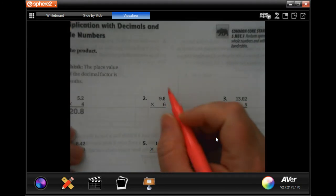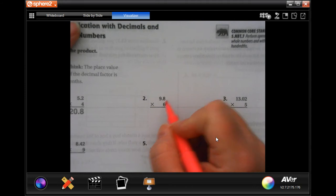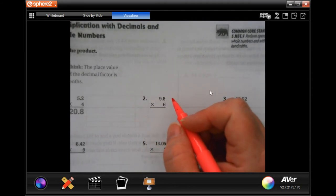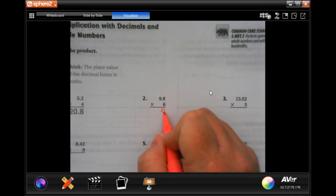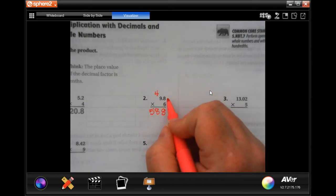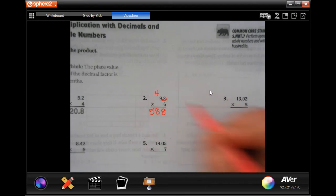So, number two, we're going to start, and we're going to just start with the multiplication, and then we'll figure out where the decimal goes afterwards. Six times eight is 48, carry the four. Six times nine is 54, plus four more, 58. Now, on the problem, there's one place behind the decimal, so we're going to go in one place and put our decimal in.